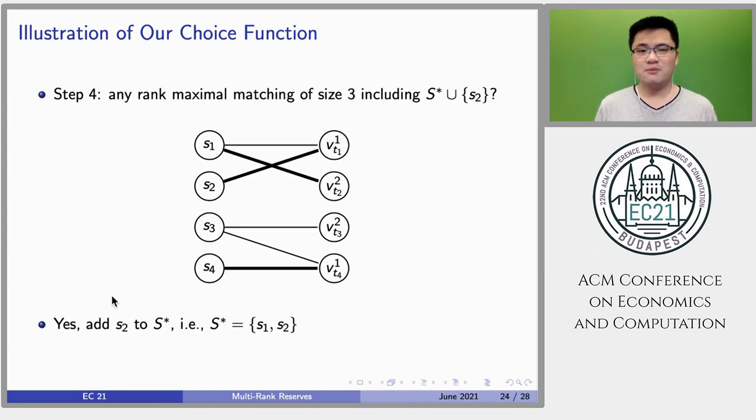Can we find a rank-maximal matching of size 3 that contains S1 and S2? Yes, then add S2 to S* and move on to student S3.